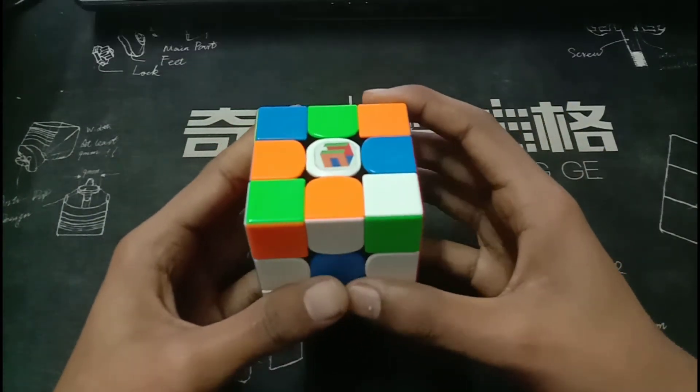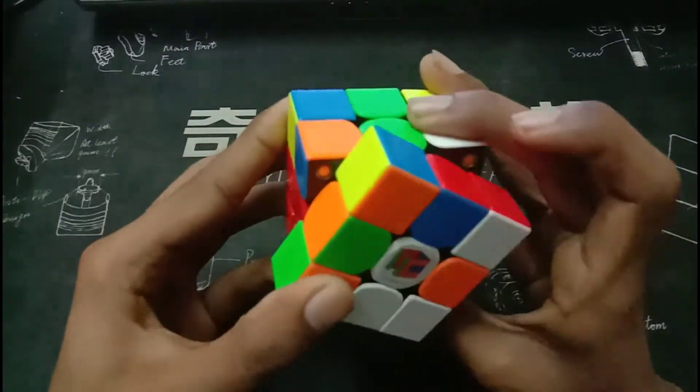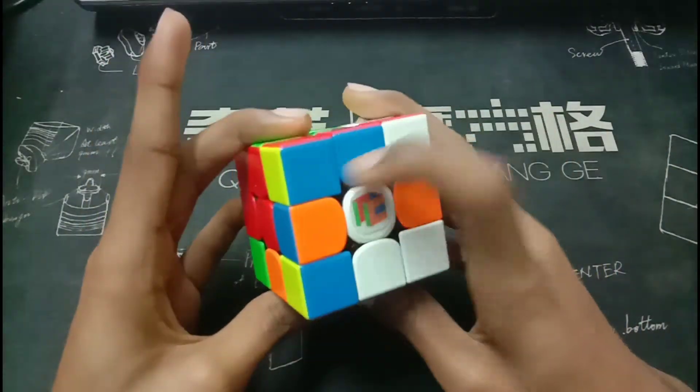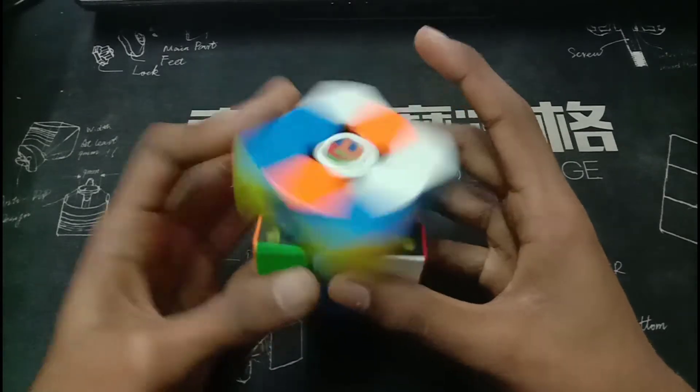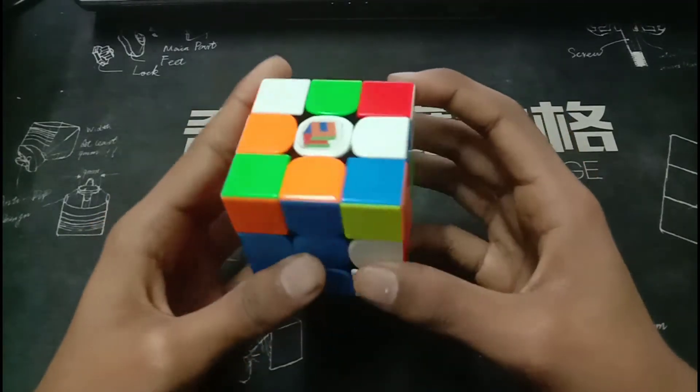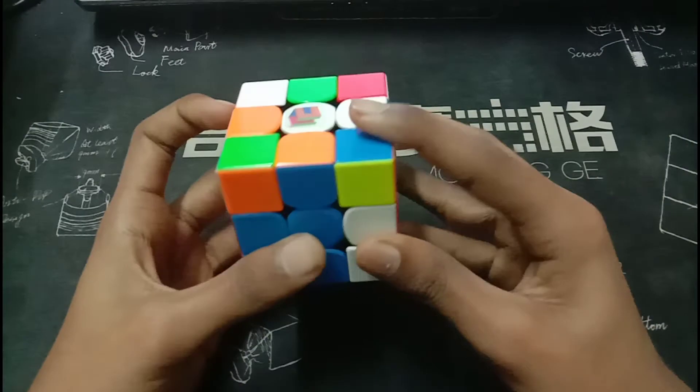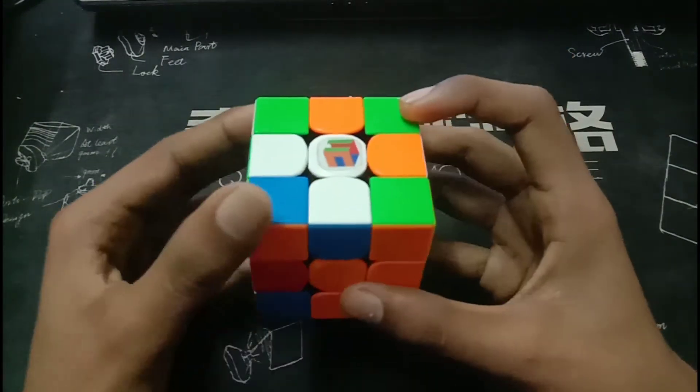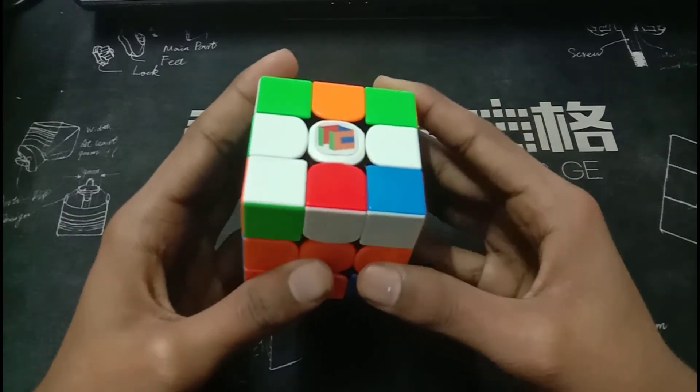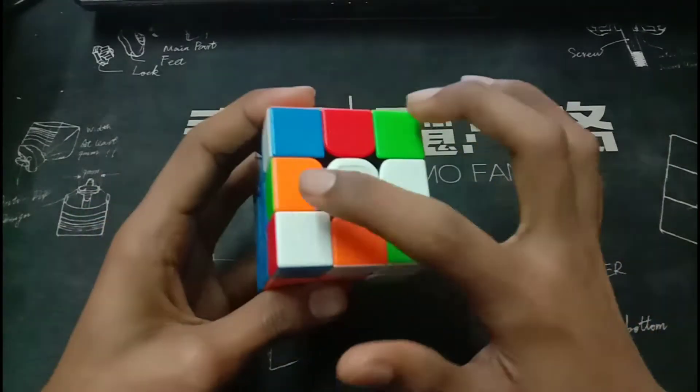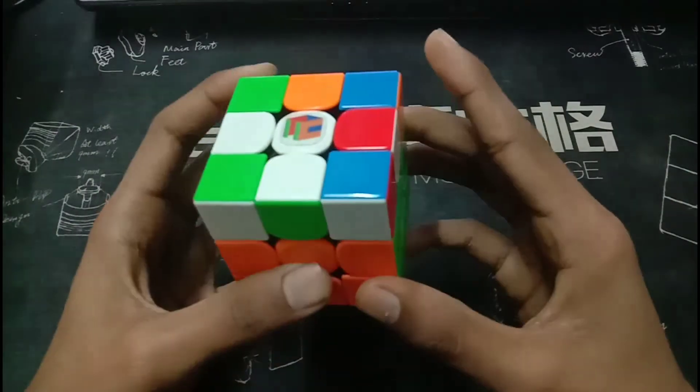So for the second pair, he matches these two. Then he separates these two, rotates, and inserts them into the front. Next, he creates this pair and inserts it into the front.